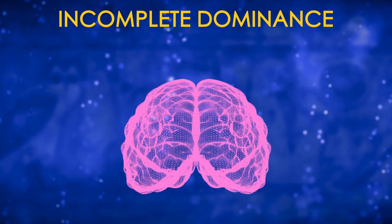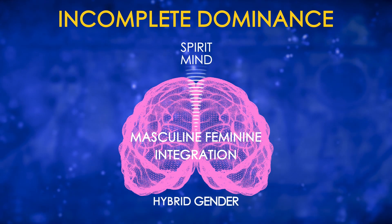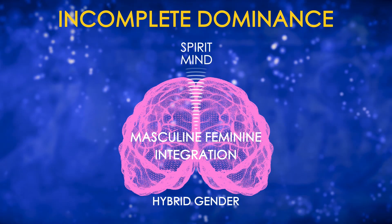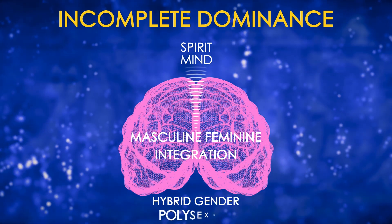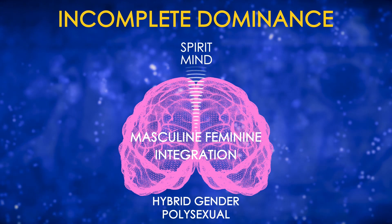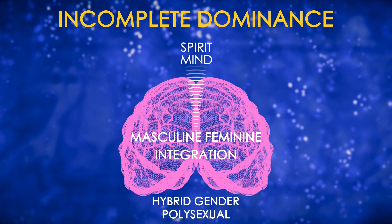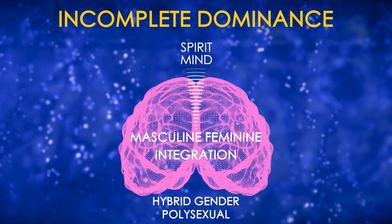Consider how incomplete dominance and co-dominance affect sexual orientation. With incomplete dominance, our masculine and feminine genders integrate into a single hybrid gender. Since masculine and feminine genders can combine in a variety of ways, hybrid gender produces polysexual behaviors. Hybrid gender is fluid in that the integration of masculine and feminine energies can take many forms and vary over a wide range.